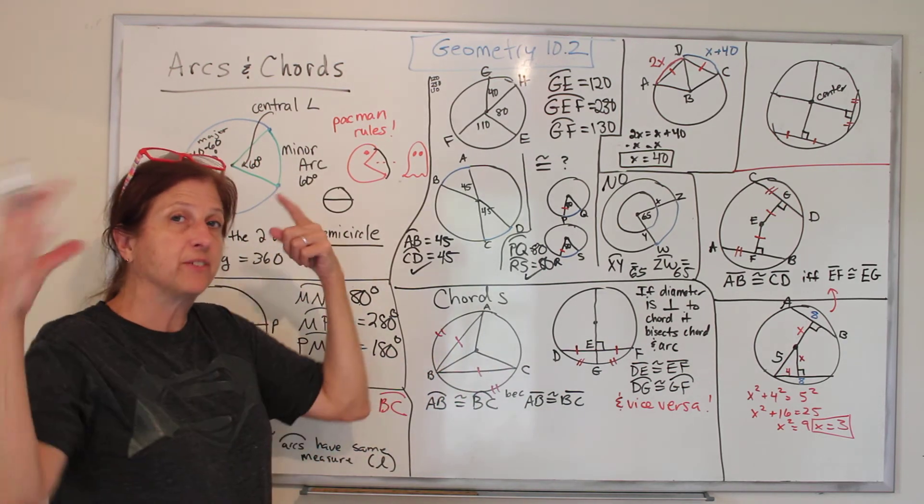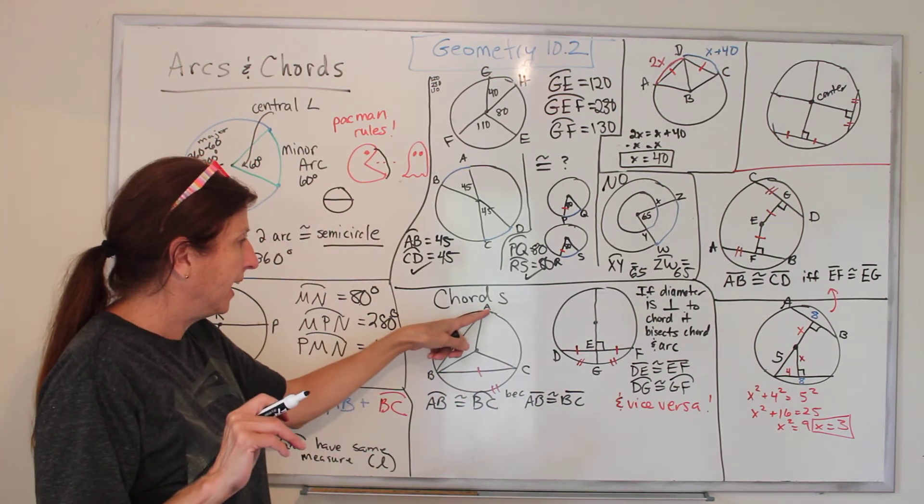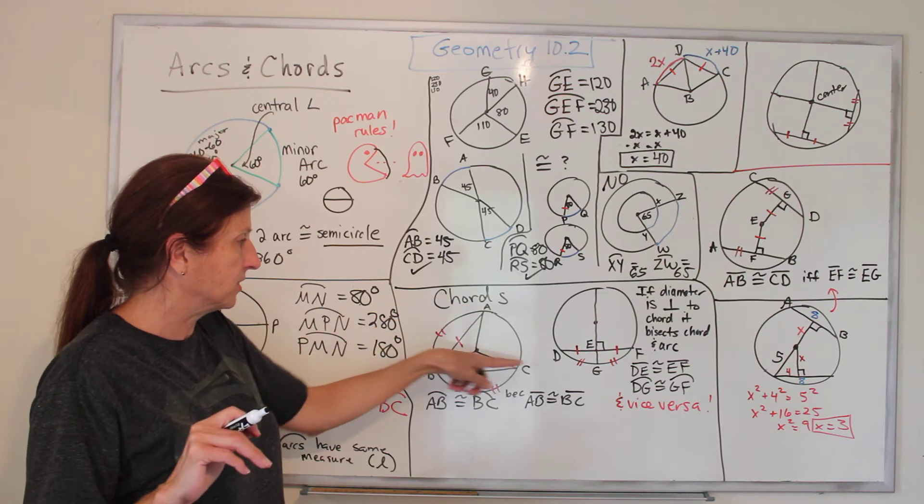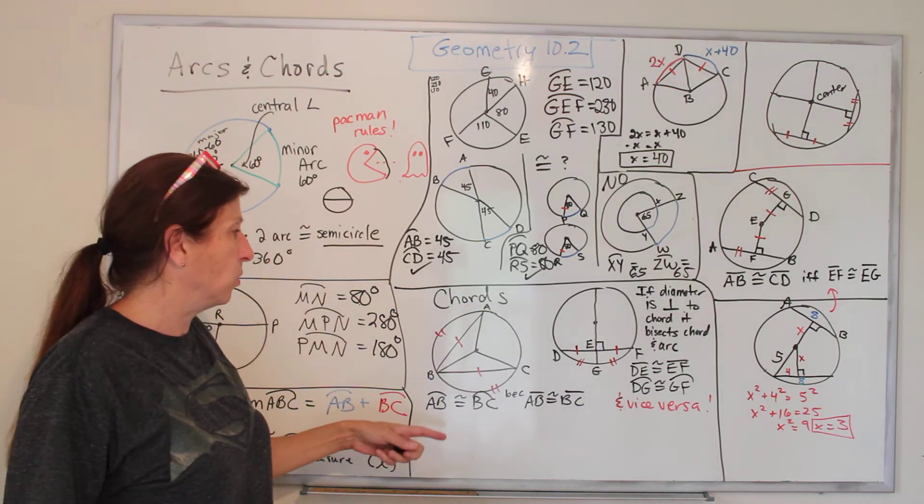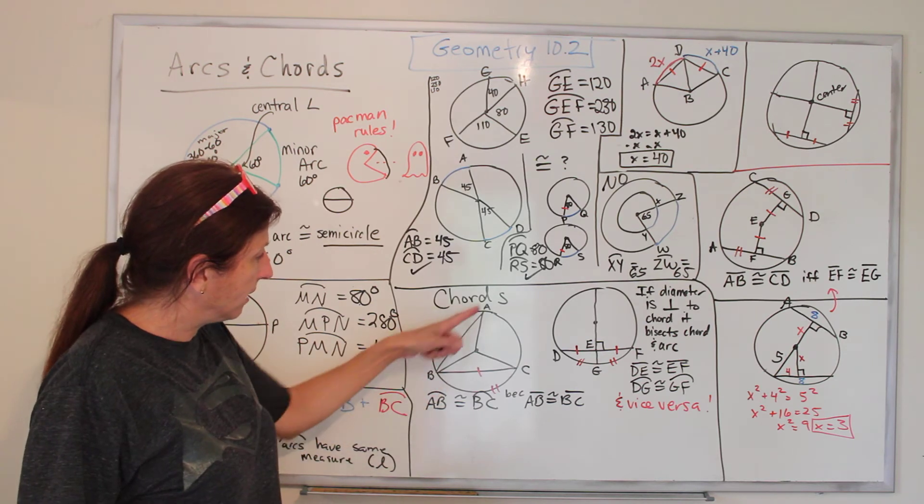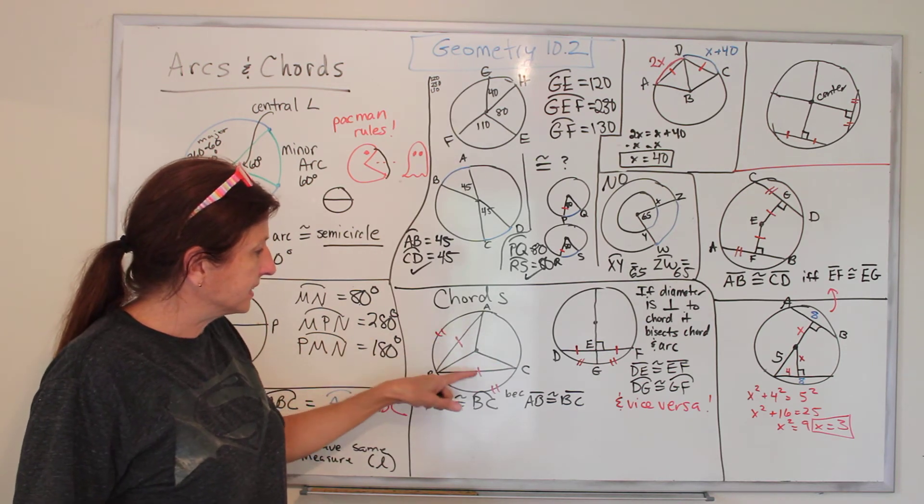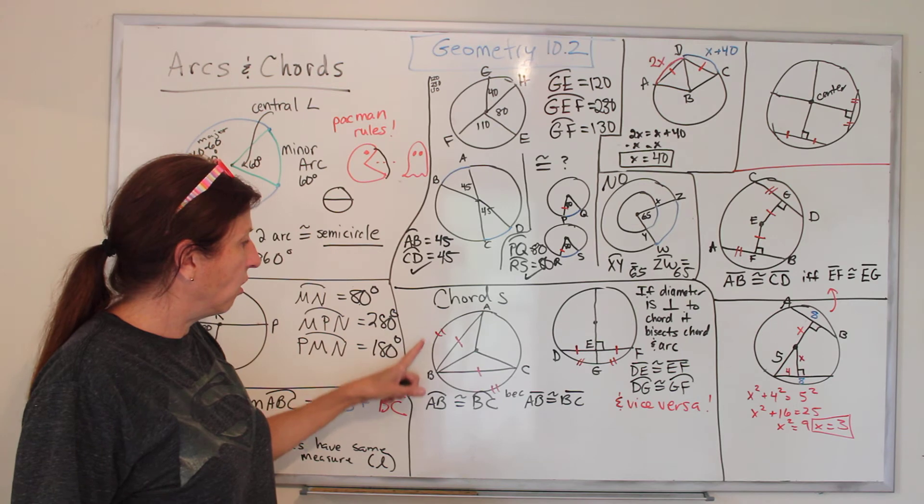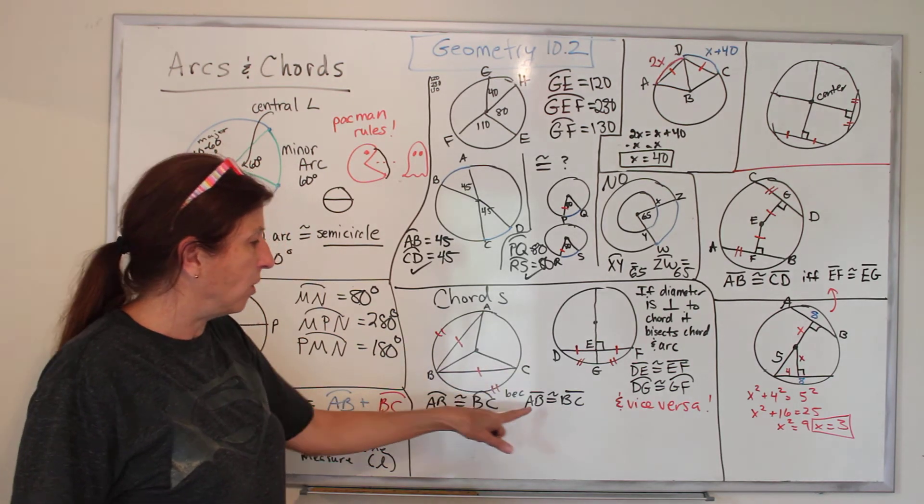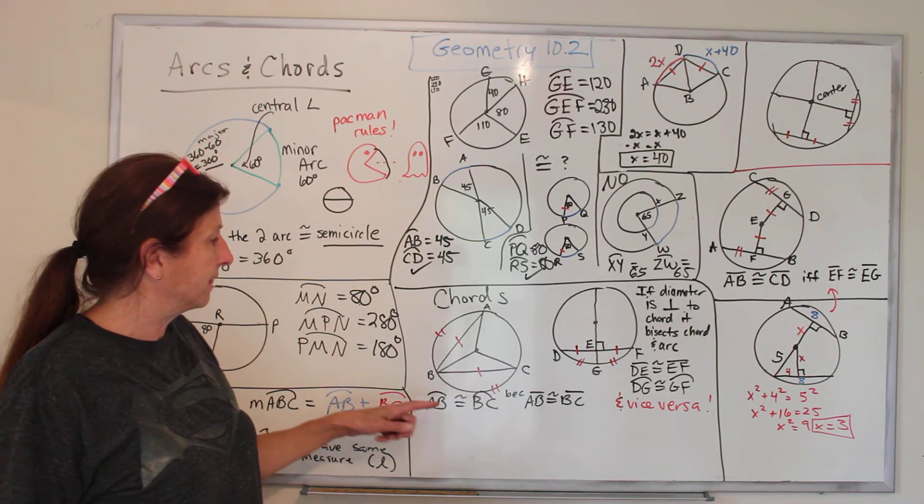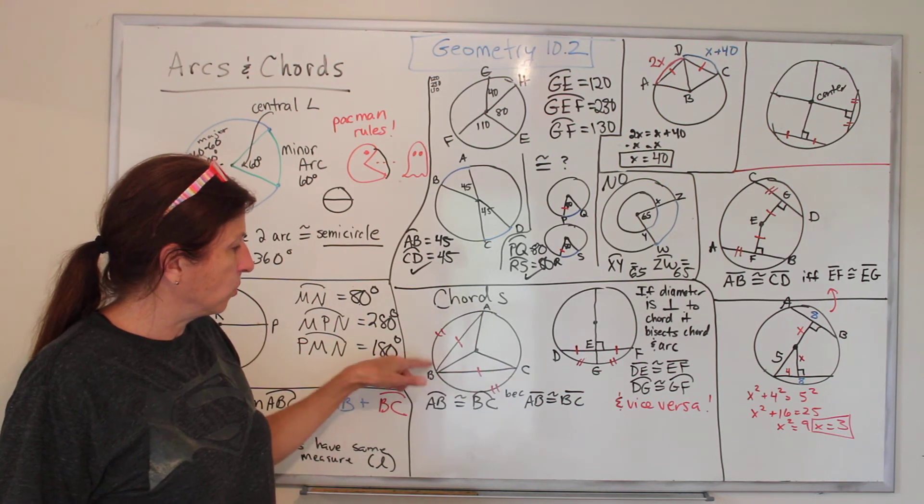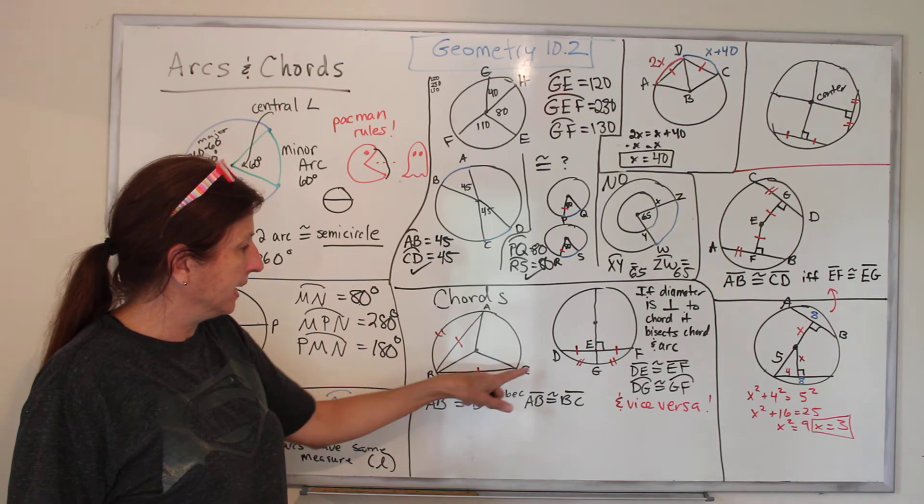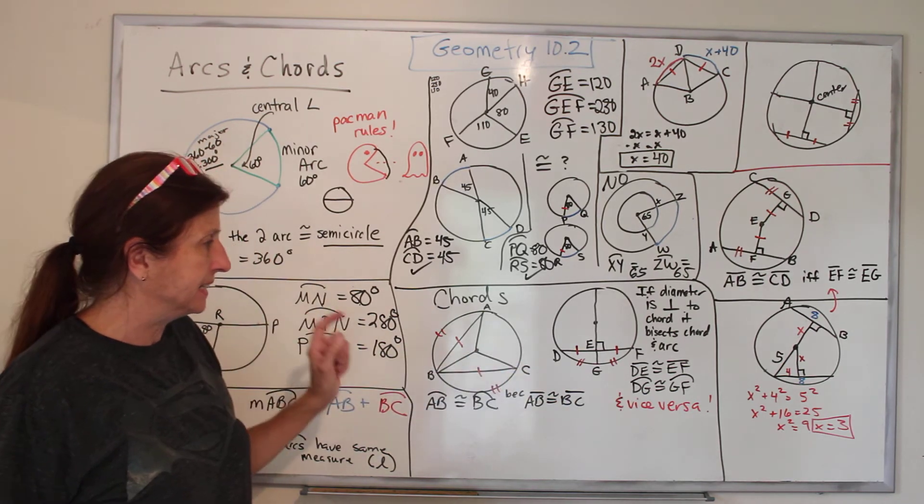Chords. Remember, chords is if you're inside the guitar, you're peeking out, and it's a line going across the circle. So here, this is some theorems about chords, that if you have two chords and they're the same length, then the arc they create will also be the same length. So chord AB equals chord BC, because line AB equals line BC.